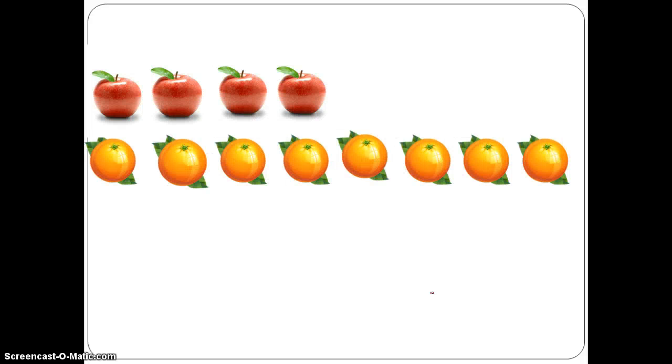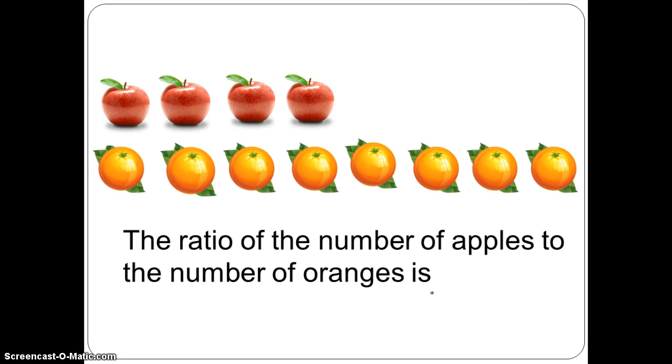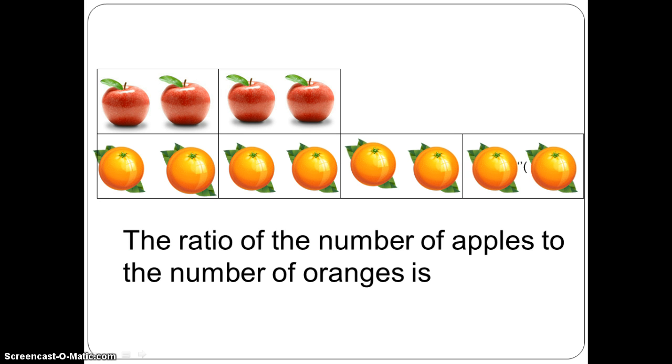Let's take a look at this picture. The ratio of the number of apples to the number of oranges is 4 is to 8. If we grouped the apples and oranges in groups of 2, we can simply say that the ratio of the number of apples to the number of oranges is 2 is to 4. 2 is to 4 means 2 units to 4 units.